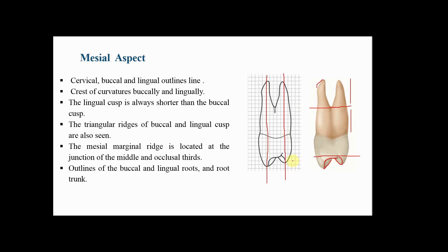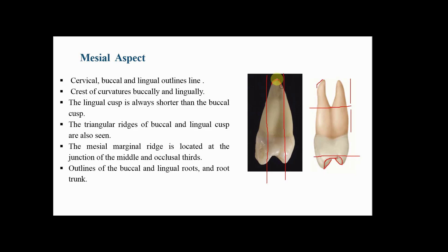Regarding the root trunk, it is long and represents about half the length of the root, bifurcating into a buccal root and a lingual root. The buccal root may show a slight tendency toward lingual inclination, and the apex of each root is blunt and in line with the tip of its respective cusp. If only one root is present, the buccal and lingual outlines end in a blunt apex in line with the center of the crown occlusal.